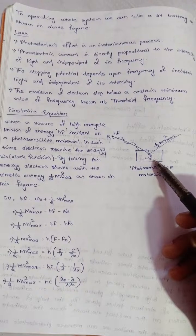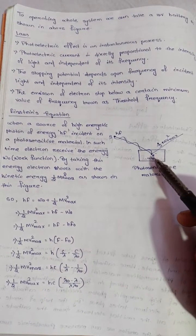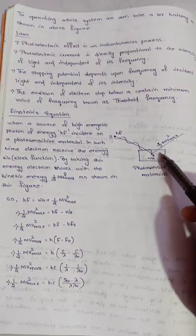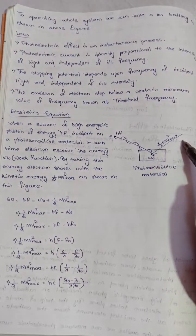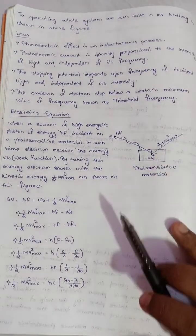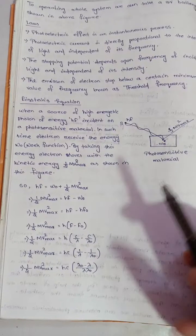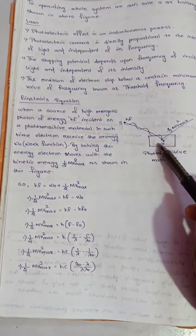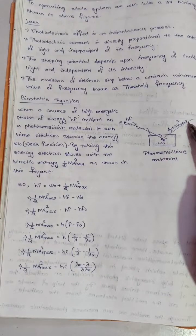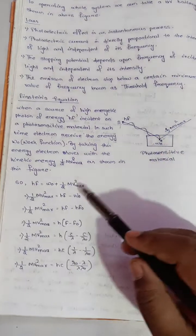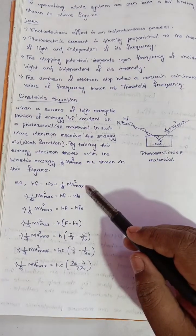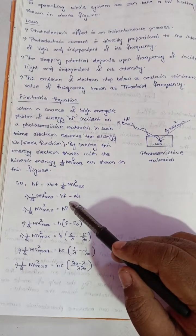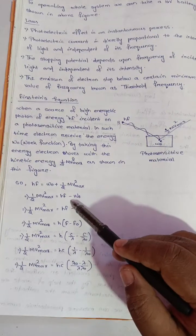The electron moves by taking this energy and moves with the maximum kinetic energy, half mv² maximum. The Einstein equation gives: hf = W₀ + half mv² maximum, so half mv² maximum = hf − W₀.